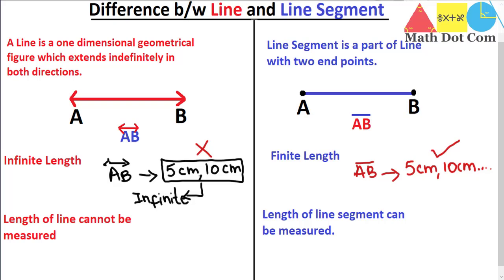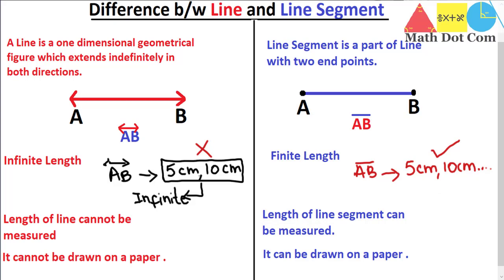You can measure a line segment with a scale. Whenever we draw figures in geometry, we consider line segments rather than lines. We can't say we have made a triangle or rectangle using lines. Another difference is that you can't draw a line on paper — obviously, how can you draw an infinite thing on paper? Similarly, you can draw a line segment on paper. A line cannot be drawn on paper, but a line segment can be drawn on paper. If you have a specific length value, you can easily draw it. But when a line has no endpoints and indefinite length, you can't draw it.